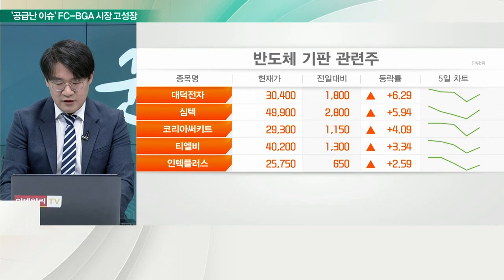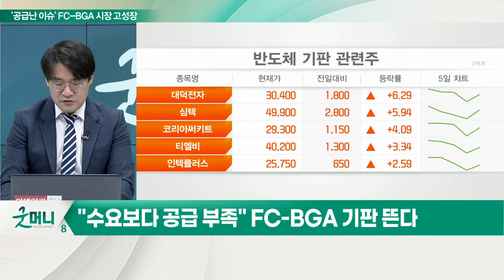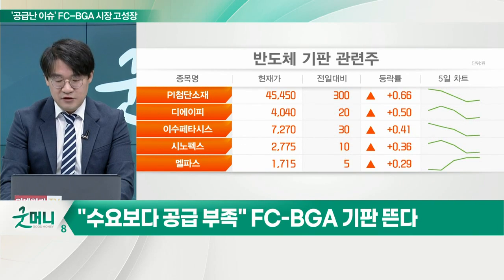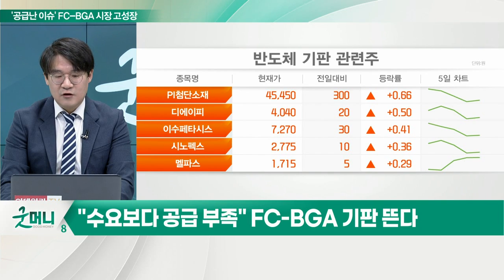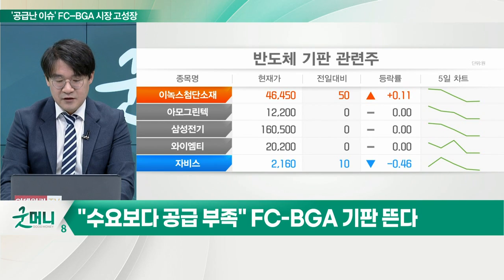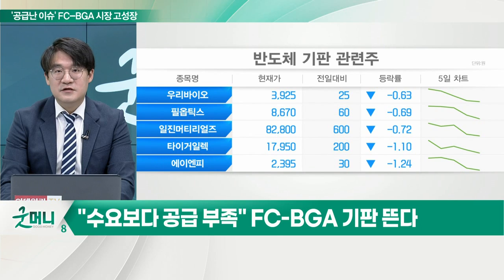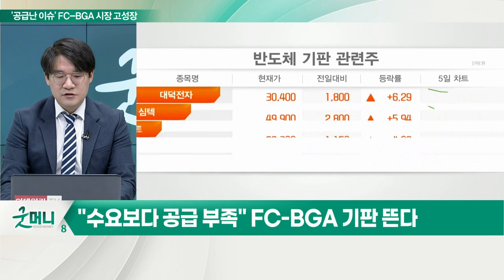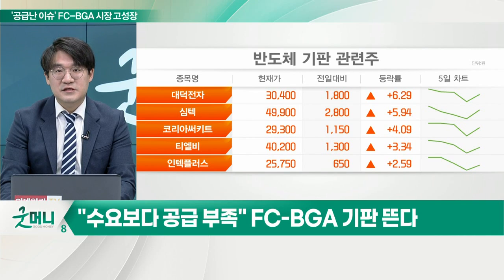FCBGA는 FC-CSP 칩 스케일 패키지보다 가격이 비싸고, AI 인공지능, 서버, 자율주행 등 고성능·고부가가치 제품에 탑재됩니다. FCBGA가 현재 각광받는 이유는 앞으로 이런 인공지능, 서버, 자율주행 시대가 크게 다가오면 이 고부가가치 기판이 핵심이 되기 때문입니다. 요즘 FCBGA를 생산하는 기업들은 증설을 하고 있거나 계획 중이고, 엔드 유저들은 FCBGA 생산 업체를 찾아다니며 장기 공급 계약을 맺으려 하고 있습니다.